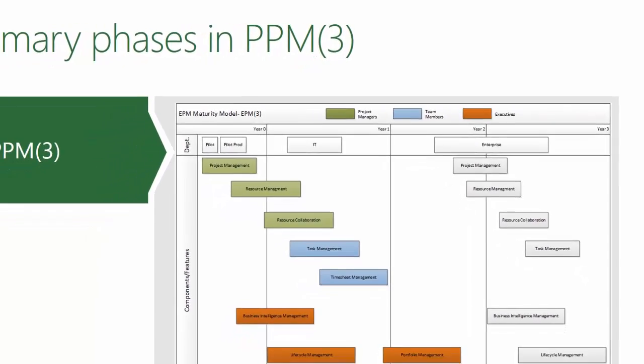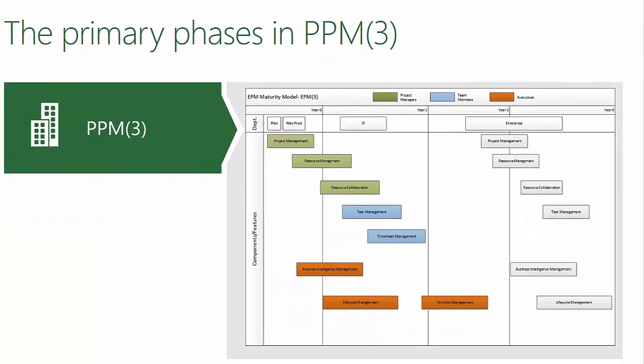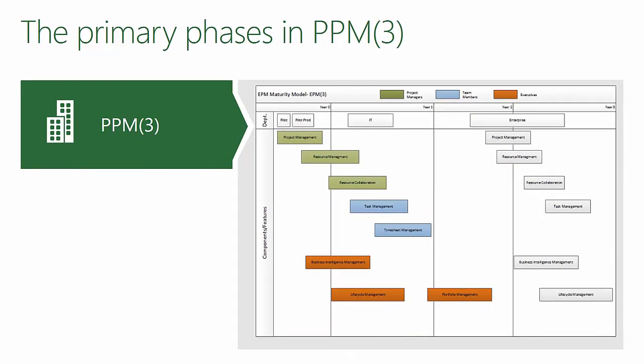Simultaneously, as we go through resource management and collaboration, we start to look at reporting, as well as lifecycle management from the perspective of project requests and approvals, eventually moving into portfolio management, and then integrating and moving those out to additional departments or business units.